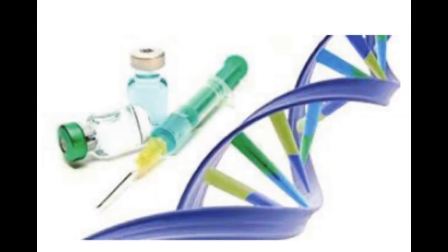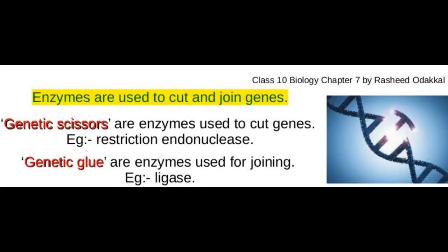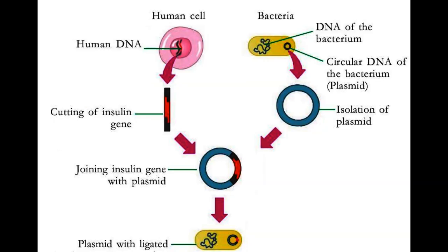The enzyme restriction endonuclease, which is used to cut genes, is known as genetic scissors. The enzyme ligase, which is used for joining, is called genetic glue. The circular DNA in bacteria — the plasmid — is used as a vector for transferring genes to another cell. Look at illustration 7.1 in your textbook.